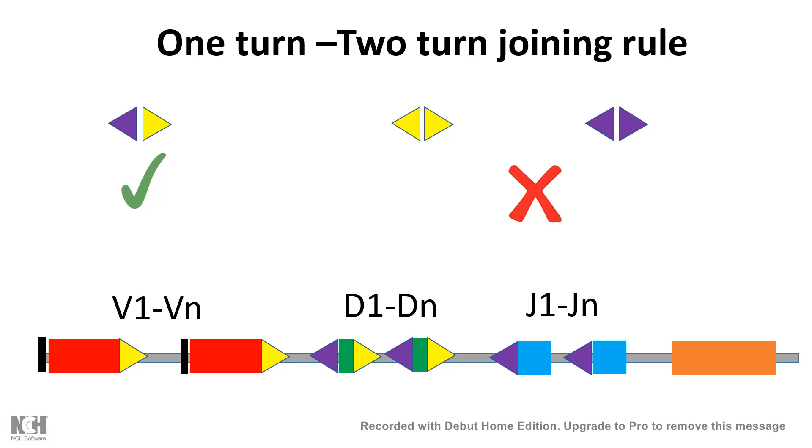This ensures that gene segments recombine in proper order and prevents internal recombination within the D segment or J segments themselves. Intra-segmental recombination cannot happen by following this rule, which is a clever design that evolved over time.